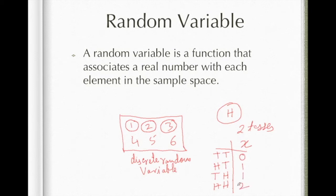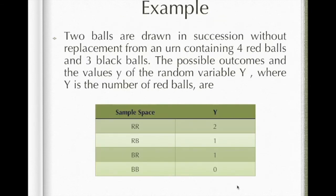Take an example: two balls are drawn in succession without replacement from an urn containing 4 red balls and 3 black balls. The possible outcomes and the value Y, which we call a random variable here.